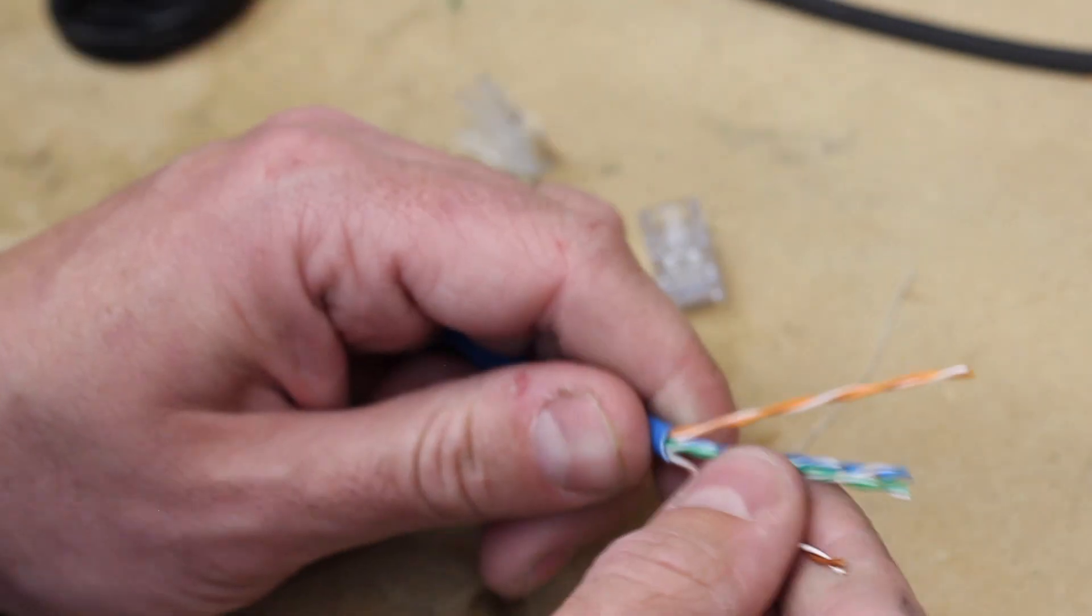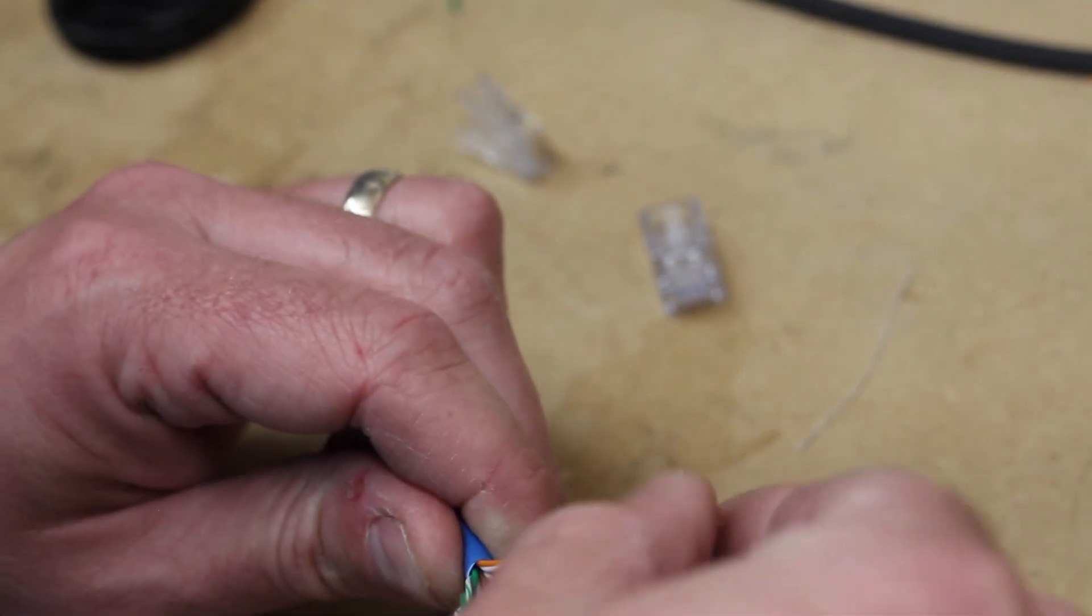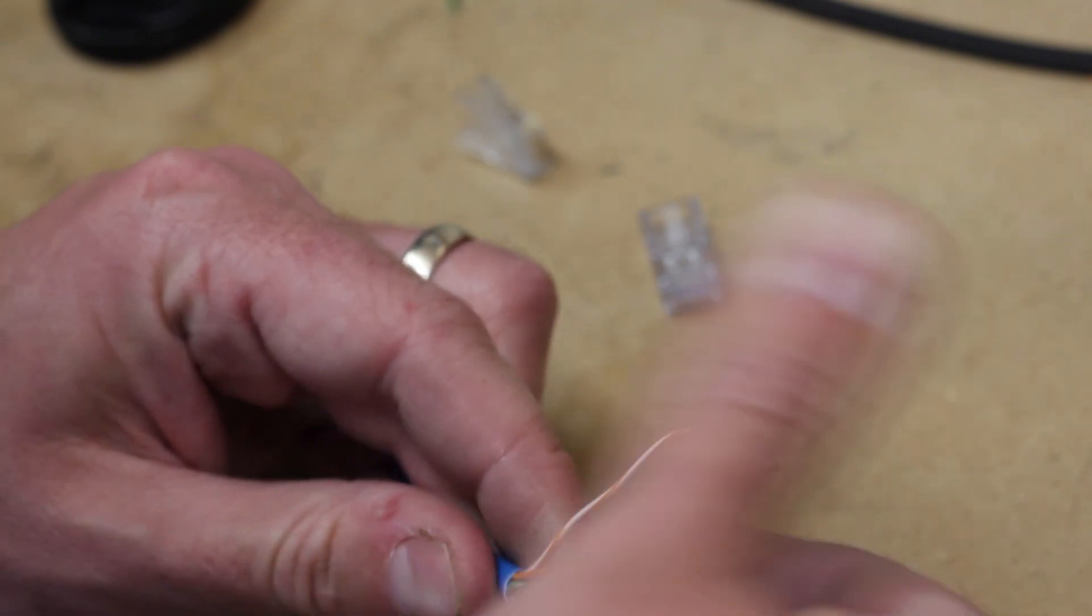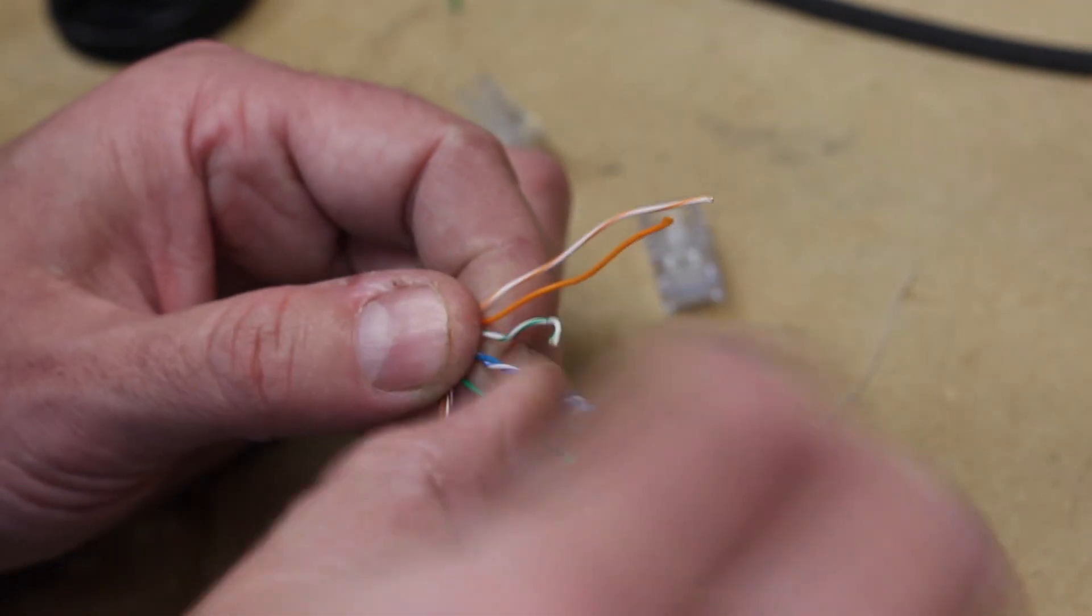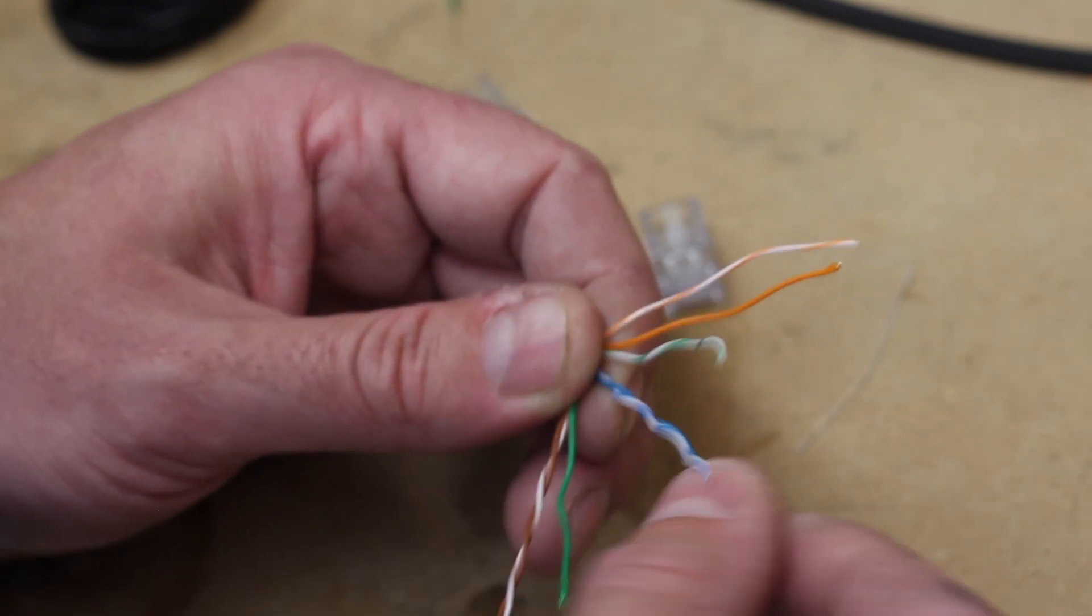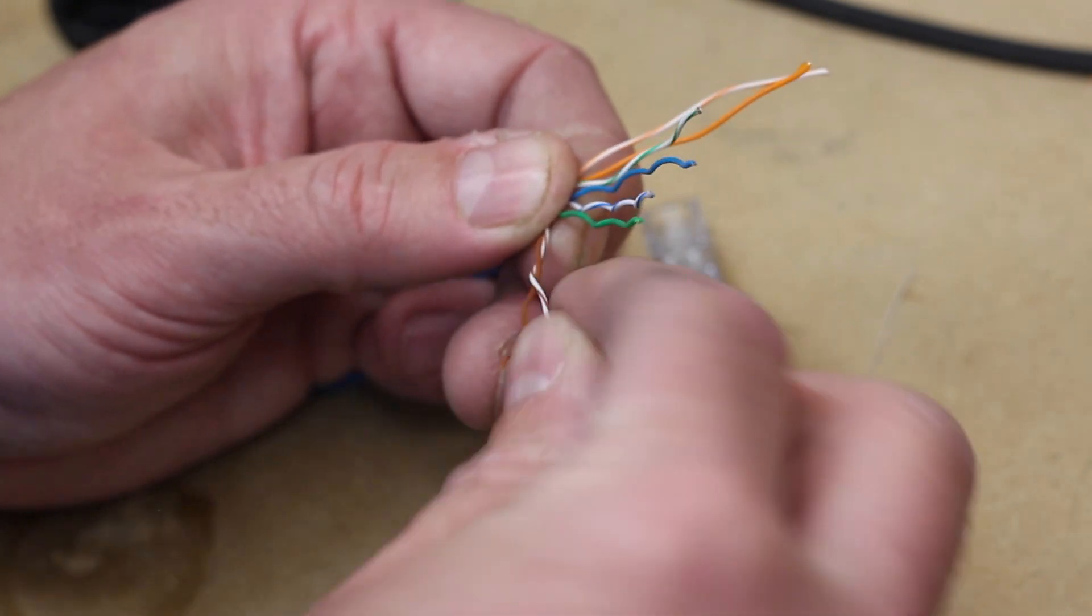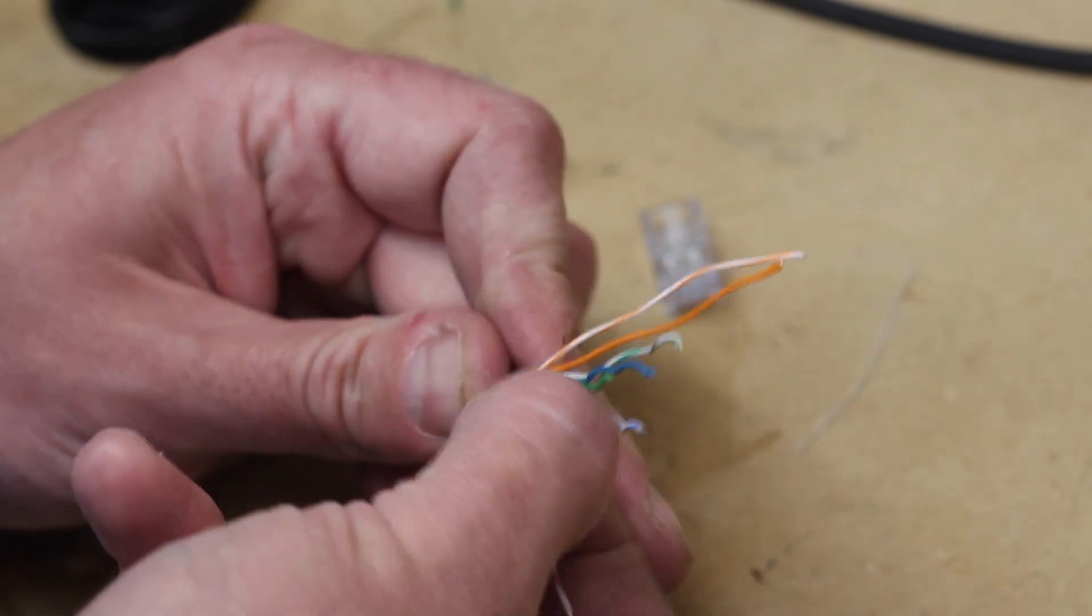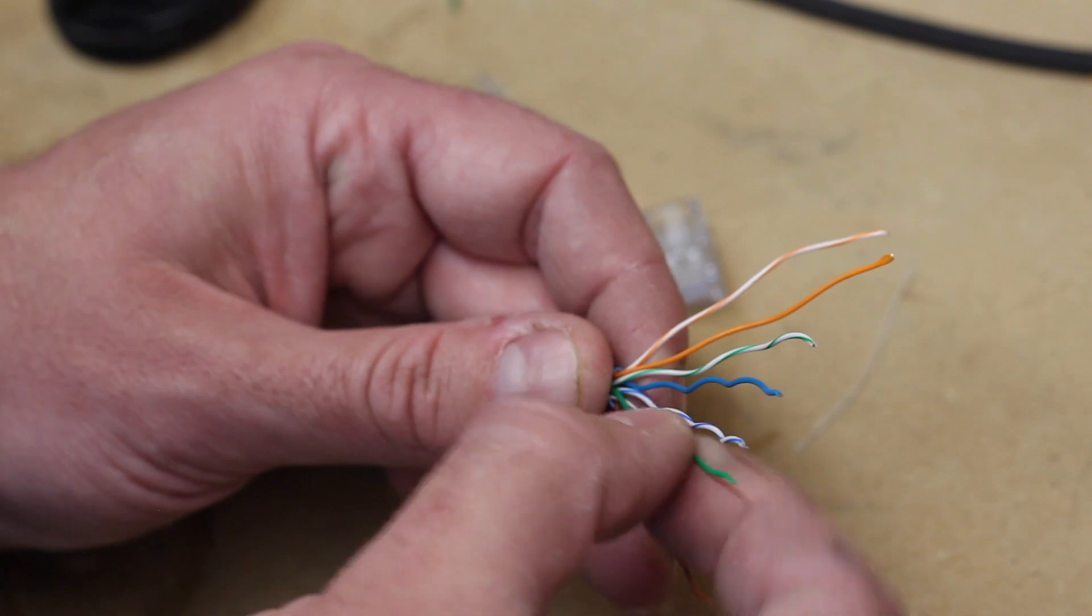I like 568B, which means orange first. So we go orange white, orange, green white, blue, blue white, green. So if you can't get it where you need it to be without untwisting too far, just twist more. Green, blue, blue, green, brown white, brown.